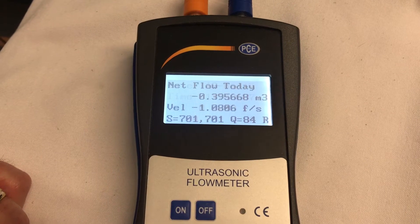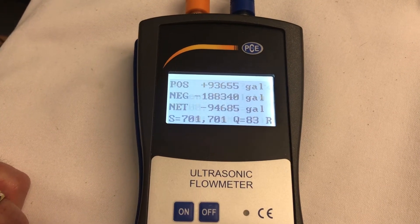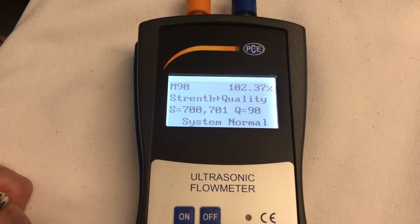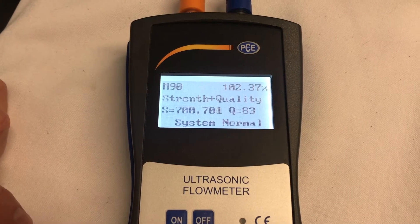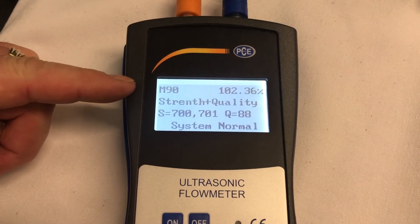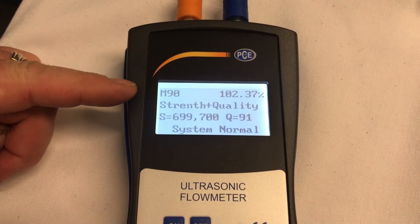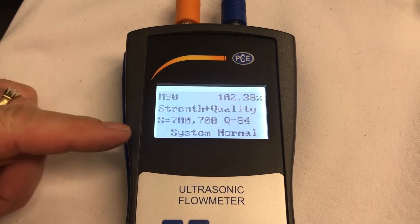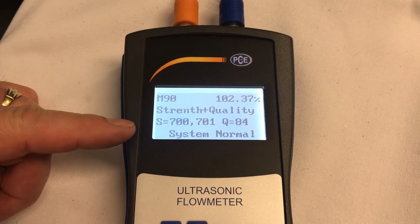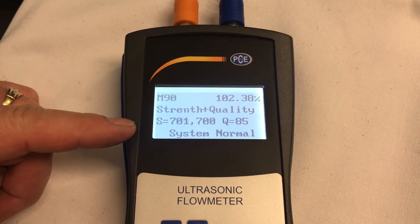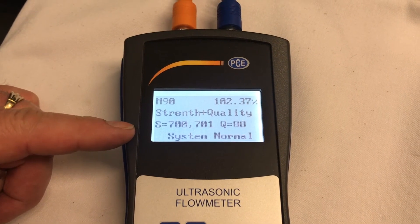Next, we get to M-90, which is time constant. The time constant on M-90 has to be 100%. And the signal strength is greater than 700. And the signal quality is greater than 60.